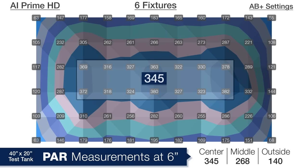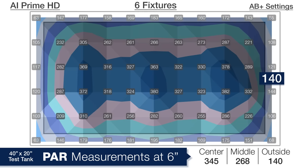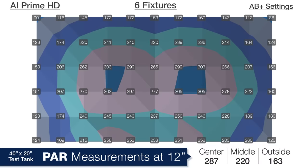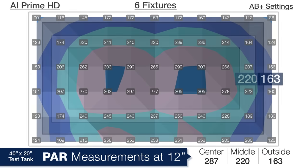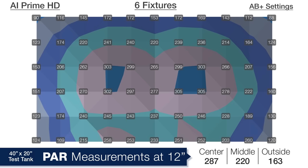We now see an average of 345 in the center of the tank, 268 four inches outside that, and 140 on the outer edges. At 12 inches deep the tank has pretty solid performance with 287 in the center of the tank, 220 in the middle ring, and 163 in the outer edges. However most notably there is lower PAR on the back and sides of the tank.